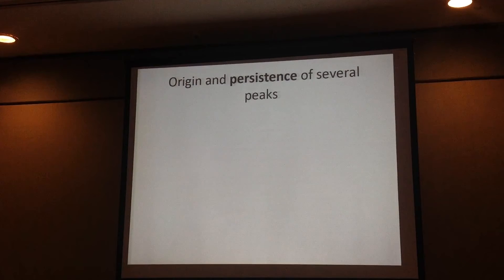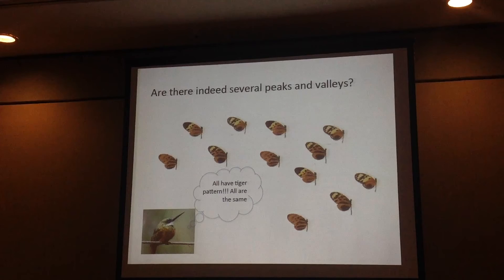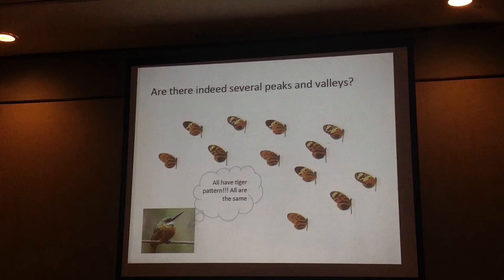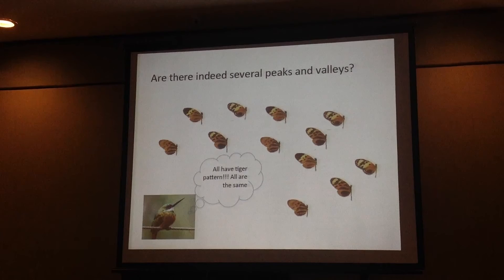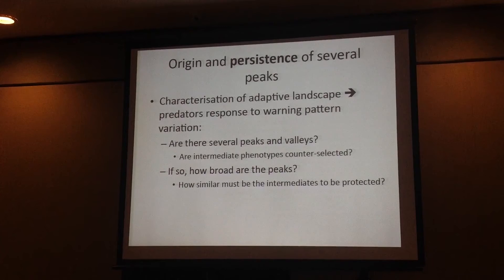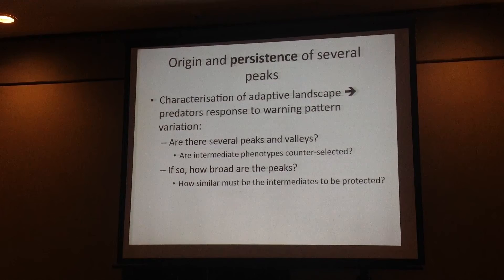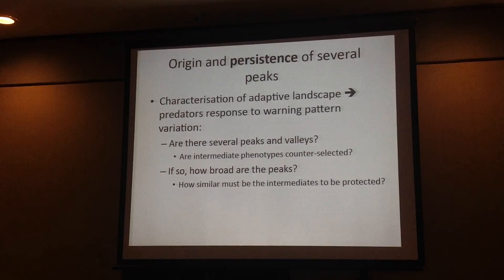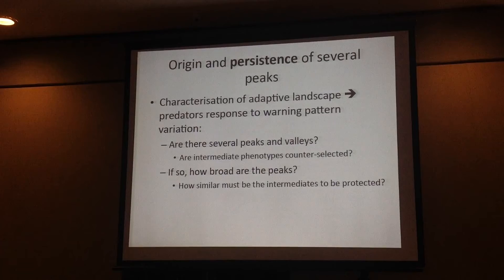Now let's move to the second part: the persistence of these several peaks in Heliconius numata. First, one question we should ask is whether all morphs are quite similar — all are orange, black, and have yellow spots. Maybe all are just a tiger pattern and are recognized as such by predators. So in this experiment, what we were aiming to do was to characterize the adaptive landscape by the predator response to warning pattern variation — to test if indeed there are several peaks and valleys, and if those peaks are broad or not and if those valleys are deep or not.